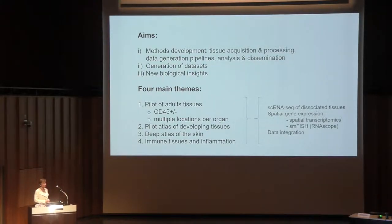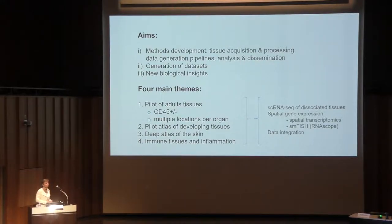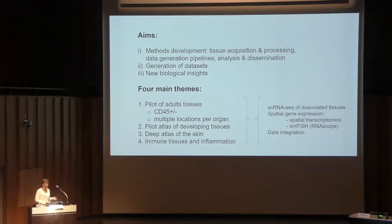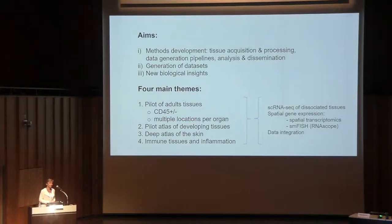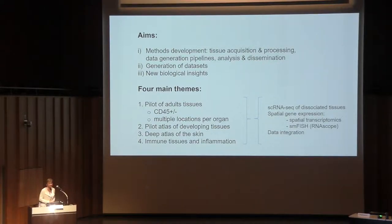These three aims have been or will be applied to four different themes. First, a pilot of adult tissues — and as Sarah mentioned, all the groups forming this consortium have a strong immune interest, so for all tissues we are purifying immune cells as well as looking at the non-immune component, and for each organ we are analysing multiple locations. The second theme is an atlas of developing tissue; third, a deep dive into the skin. We are also following a strategy of looking at dissociated tissues in conjunction with spatial gene expression, developing spatial transcriptomics and smFISH, particularly RNA scope, into a more high-throughput state.